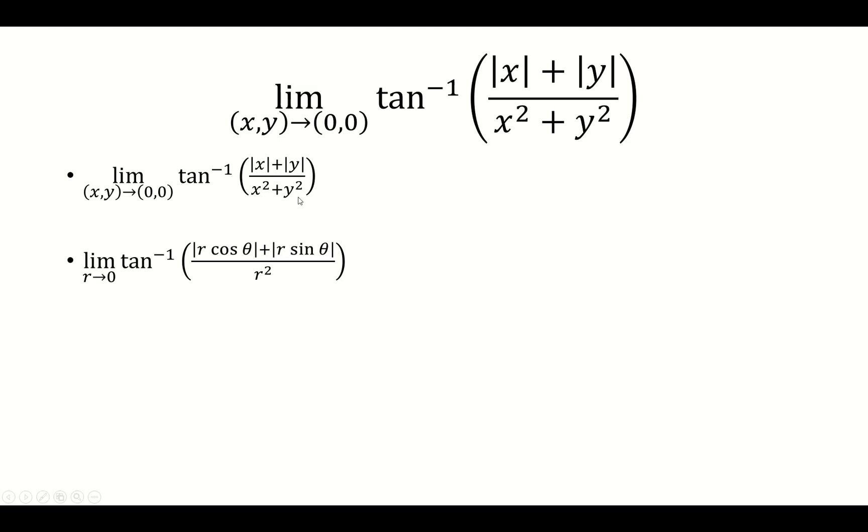We know x squared plus y squared is r squared. So right now we can factor out an r. The r will come outside the absolute value with absolute value of r. So we'll factor that out from both of these, and we're left with absolute value of cosine plus absolute value of sine.